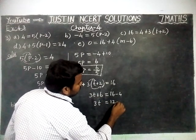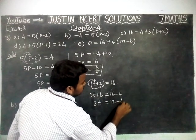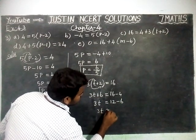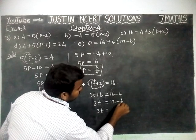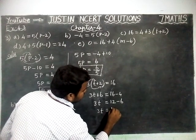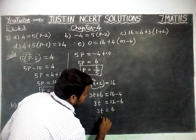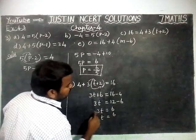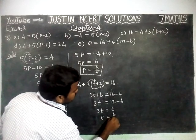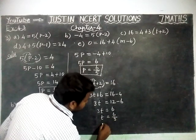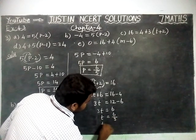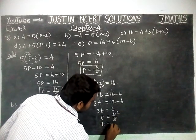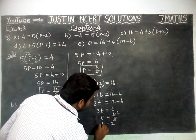This 6 is going to the right hand side, so minus 6. 3T is equal to 12 minus 6, which equals 6. T is equal to 6. This 3 is going to the right hand side, so denominator 3. T is equal to 6 divided by 3. 1 three is 3, 2 threes are 6, so T is equal to 2.